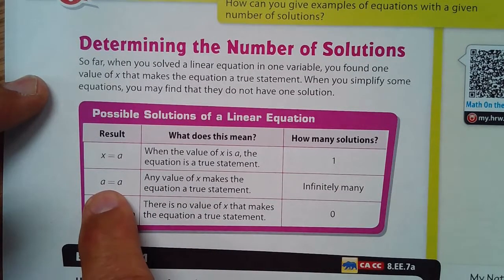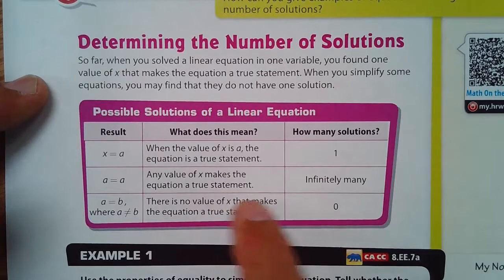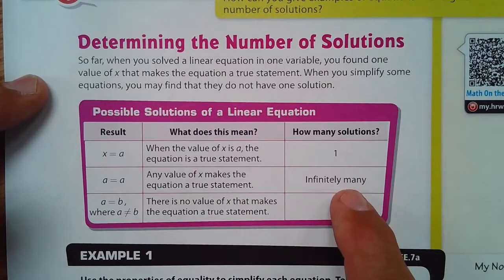When you have that number, like 5, when you have 5 equals 5 or 2 thirds equals 2 thirds, that means any value of x will give you a true statement, and you have an infinite number of solutions.